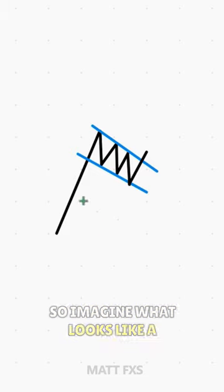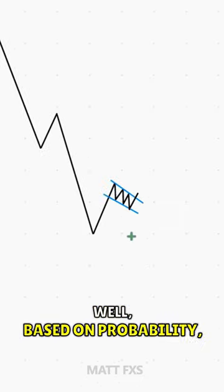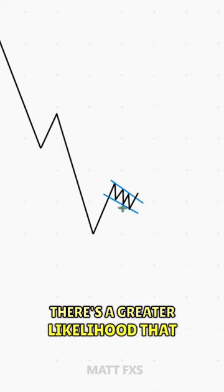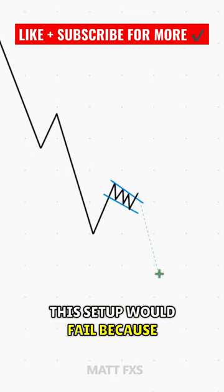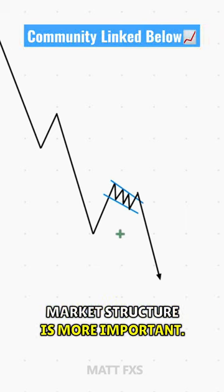So imagine what looks like a promising bullish flag pattern, except it's inside of a much larger bearish trend. Well, based on probability, there's a greater likelihood that this setup would fail because it's a countertrend movement. That's why understanding the overall market structure is more important.